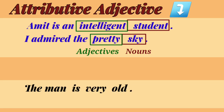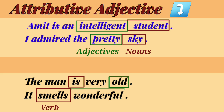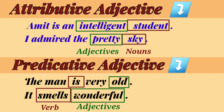The man is very old. It smells wonderful. In these sentences, is and smells are verbs, and old and wonderful are adjectives which are used after a verb. Hence, old and wonderful are predicative adjectives.